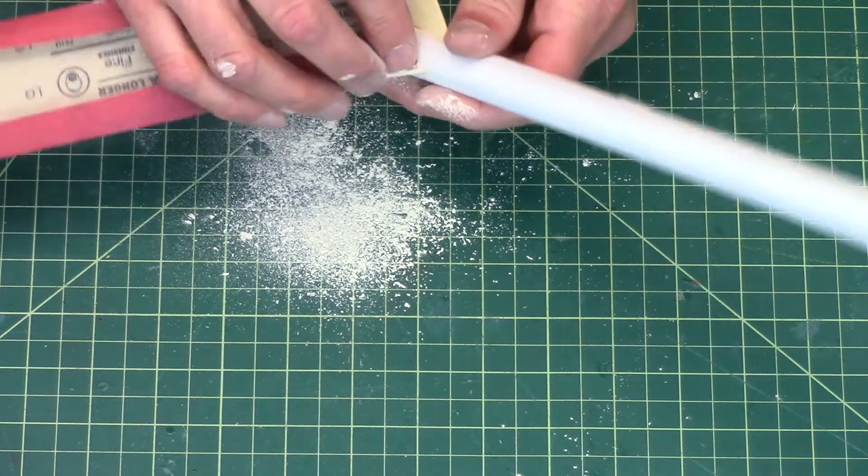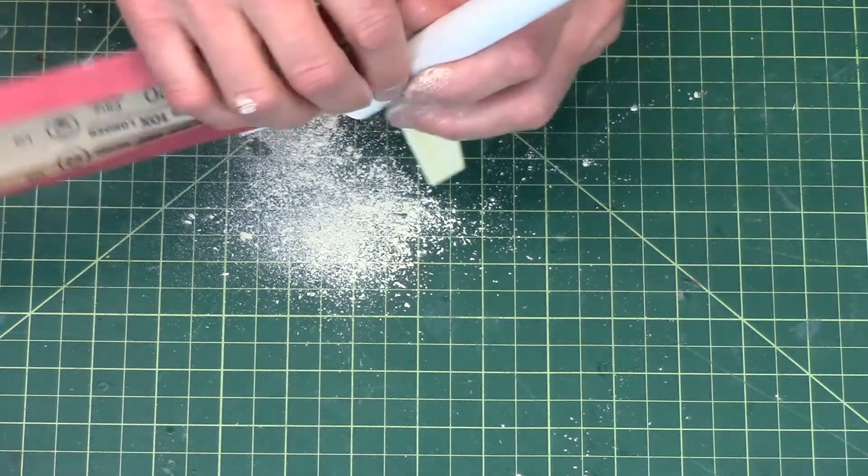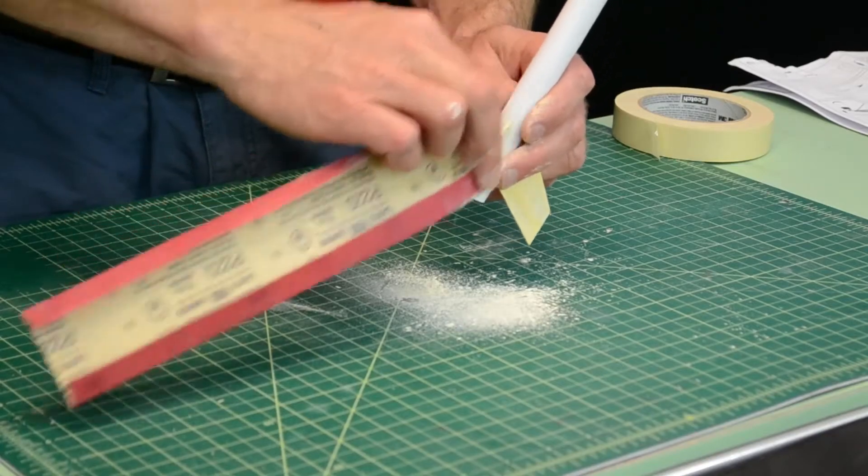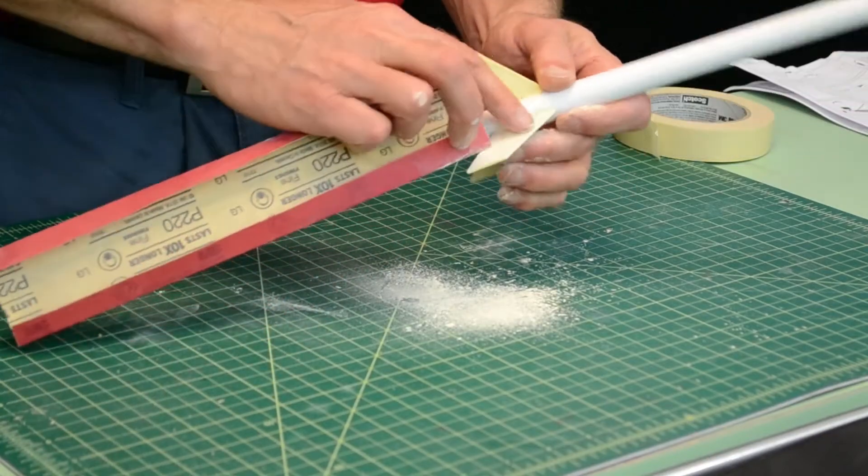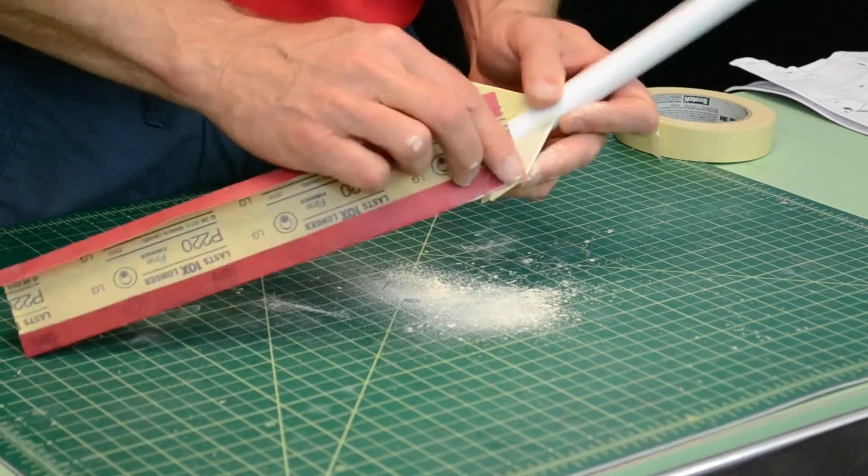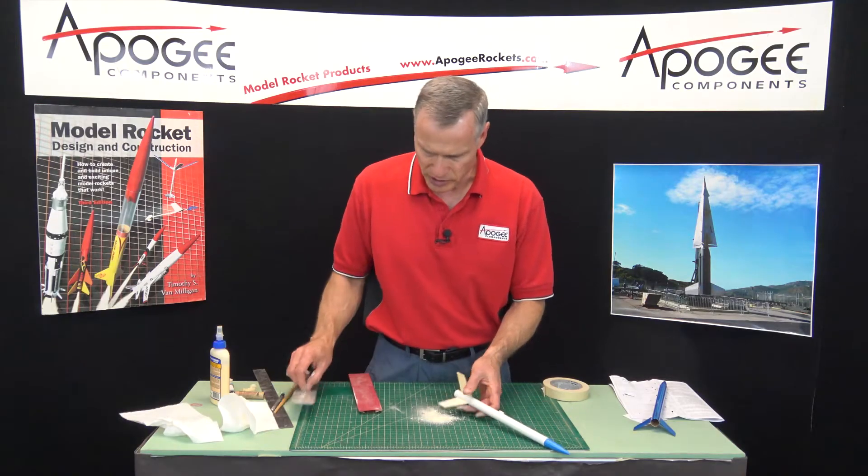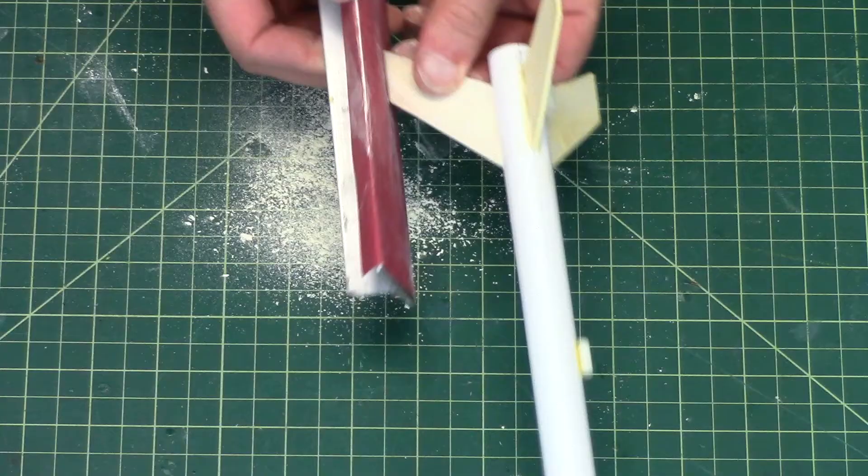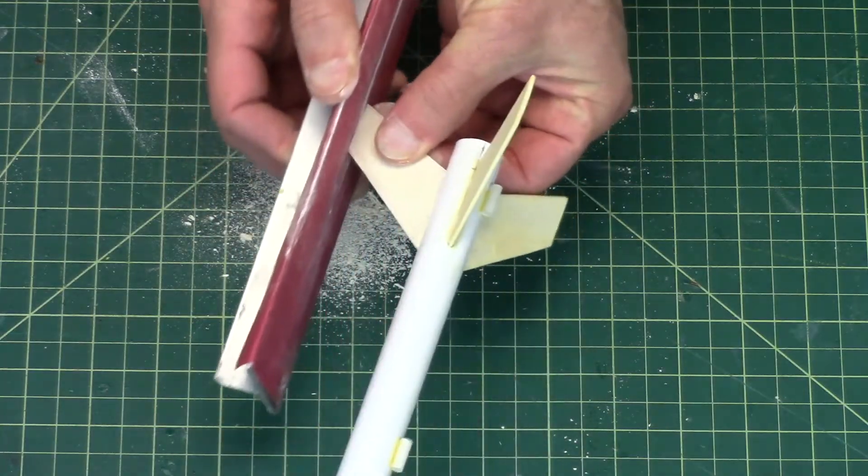Now we also did the leading and trailing edges, so go ahead and sand those. I usually do those last because it's really easy to put a lot of pressure on them and sand too fast. So I want to do that nice and light here on the tip. I'll go back onto the sanding block so I can get it nice and straight just like that.